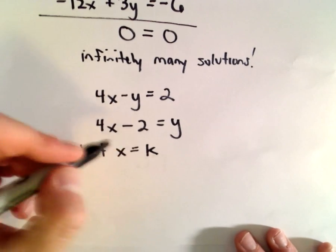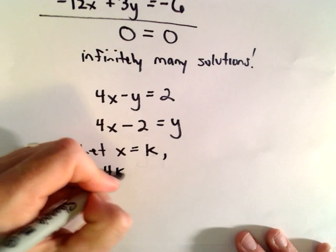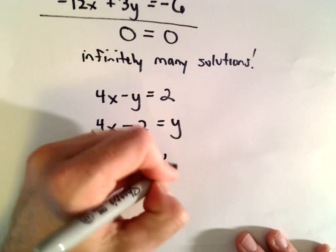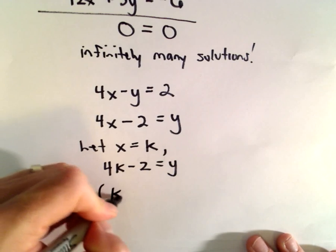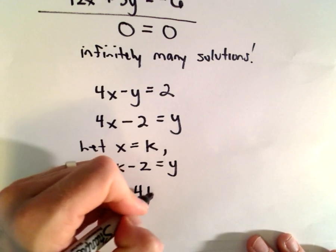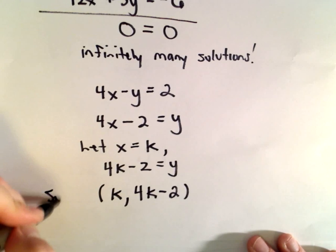Well if we do that then y is going to equal 4k minus 2, so we can say our solutions are of the form k comma 4k minus 2.